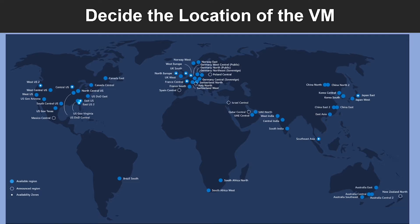Two other things to think about regarding the location choice are: first, the location can limit your available options because each region has different hardware available and some configurations are not available in all regions. Another thing to remember is there are price differences between locations. If your workload isn't bound to a specific location, it can be very cost effective to check your required configuration in multiple regions to find the lowest price.